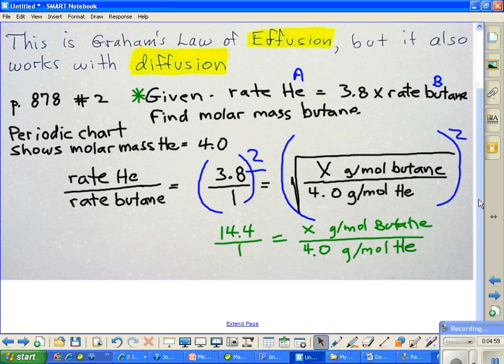When we finally get this thing worked out, we have to cross multiply. So 4 times 14.4 is equal to 57.6, and that's grams per mole of butane.